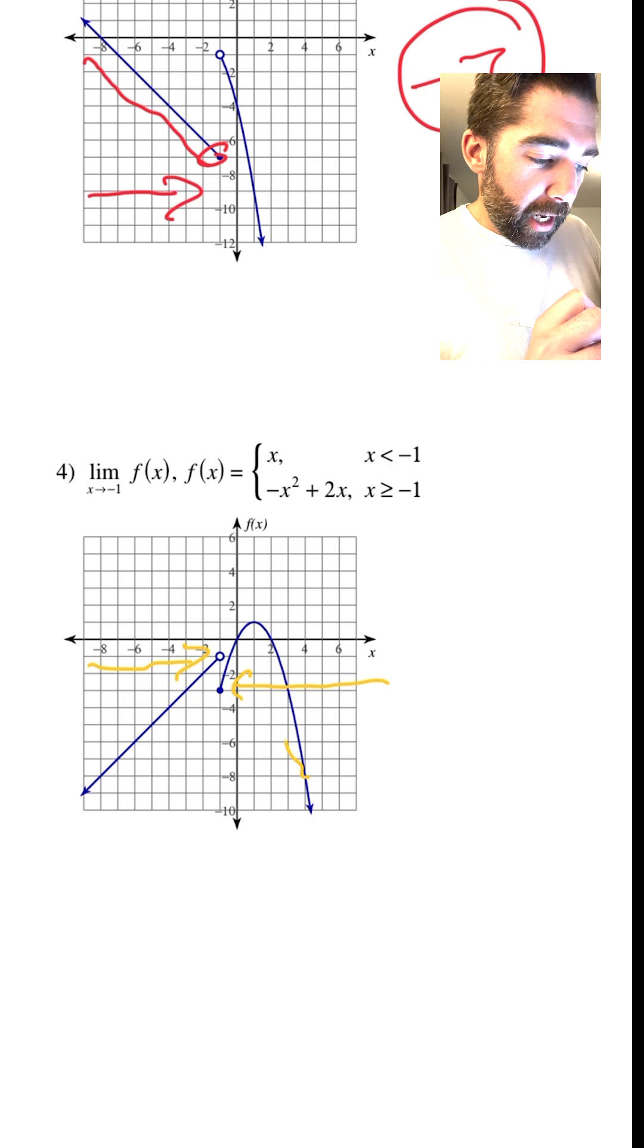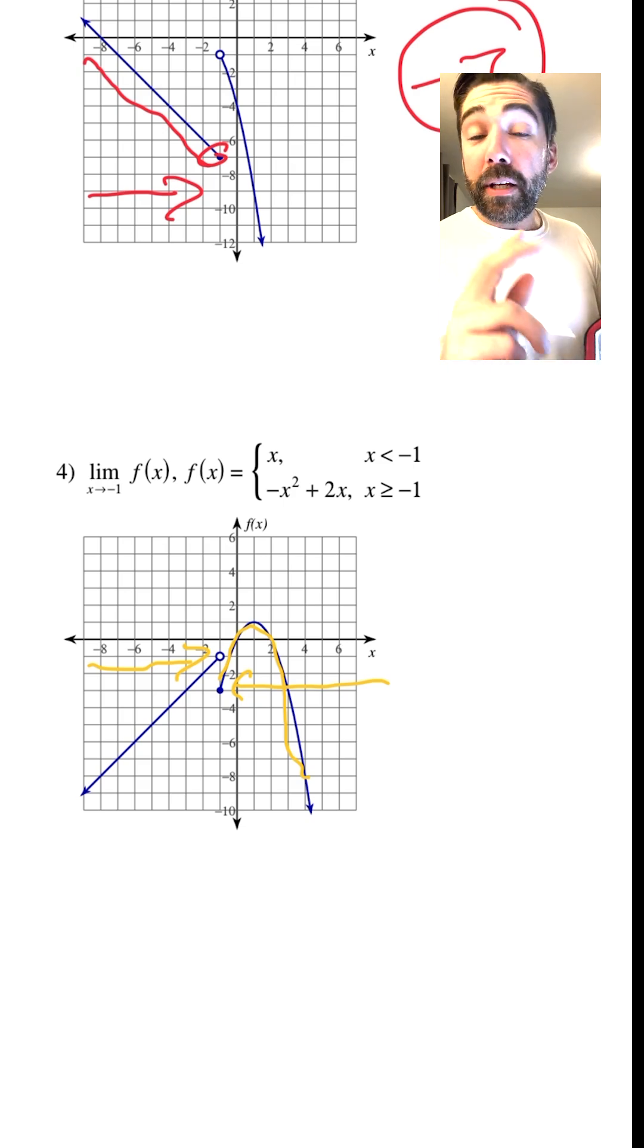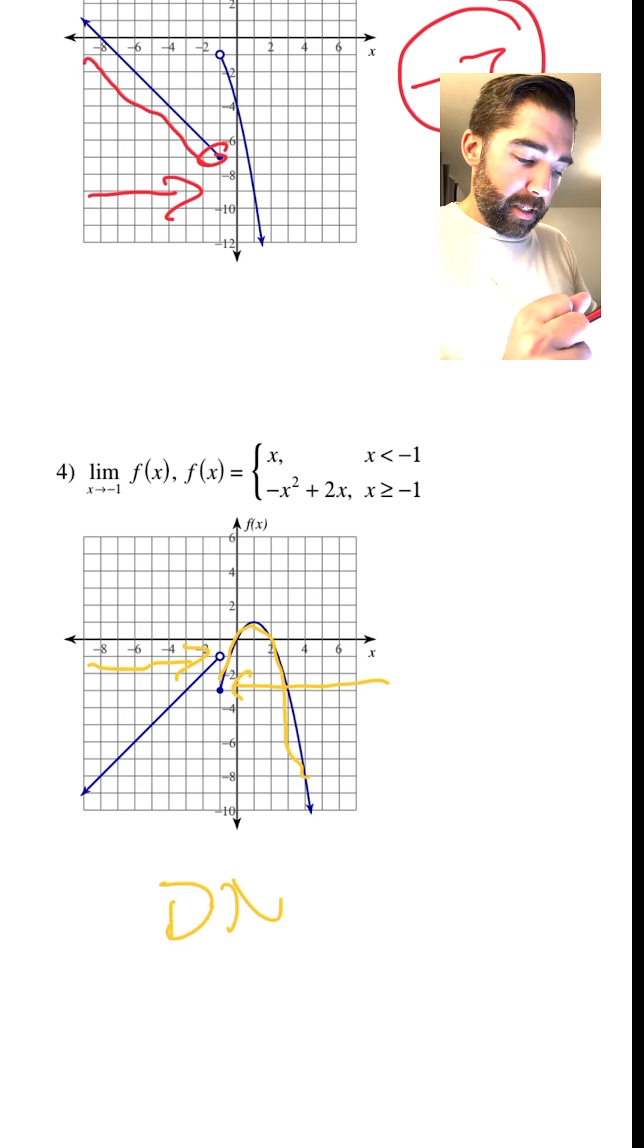But as we approach from this side, you follow that graph, we actually are approaching negative 3. So because it's different, it does not exist.